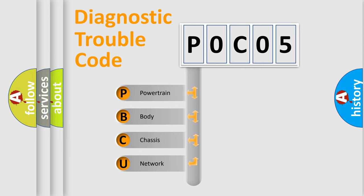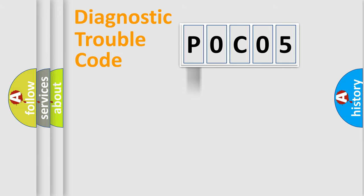We divide the electric system of automobile into four basic units: powertrain, body, chassis, and network.